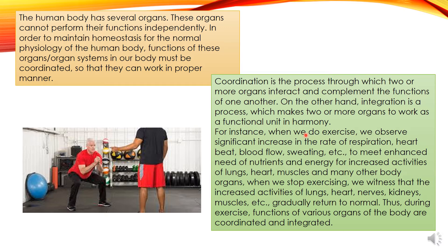Who controls this coordination? It is the neural system and the endocrine system. For instance, when we do exercise, we observe a significant increase in the rate of respiration, heartbeat, blood flow, sweating, etc., to meet the enhanced need for nutrients and energy for the lungs, heart, muscles, and many other body organs. When we stop exercising, the increased activities of the lungs, heart, nerves, kidneys, and muscles gradually return to normal. Thus, during exercise, functions of the various organs of the body are coordinated and integrated.